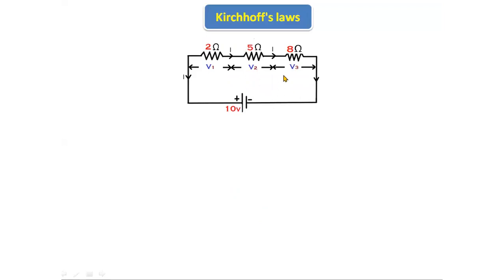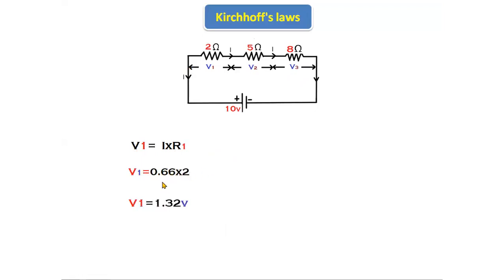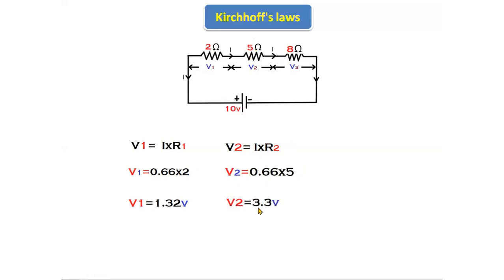Now we need to find V1, V2, and V3. We know the current I is 0.66 amperes. Using Ohm's law, V equals I into R. V1 equals I into R1 equals 0.66 into 2, giving V1 equals 1.32 volts. V2 equals I into R2 equals 0.66 into 5, giving V2 equals 3.3 volts.